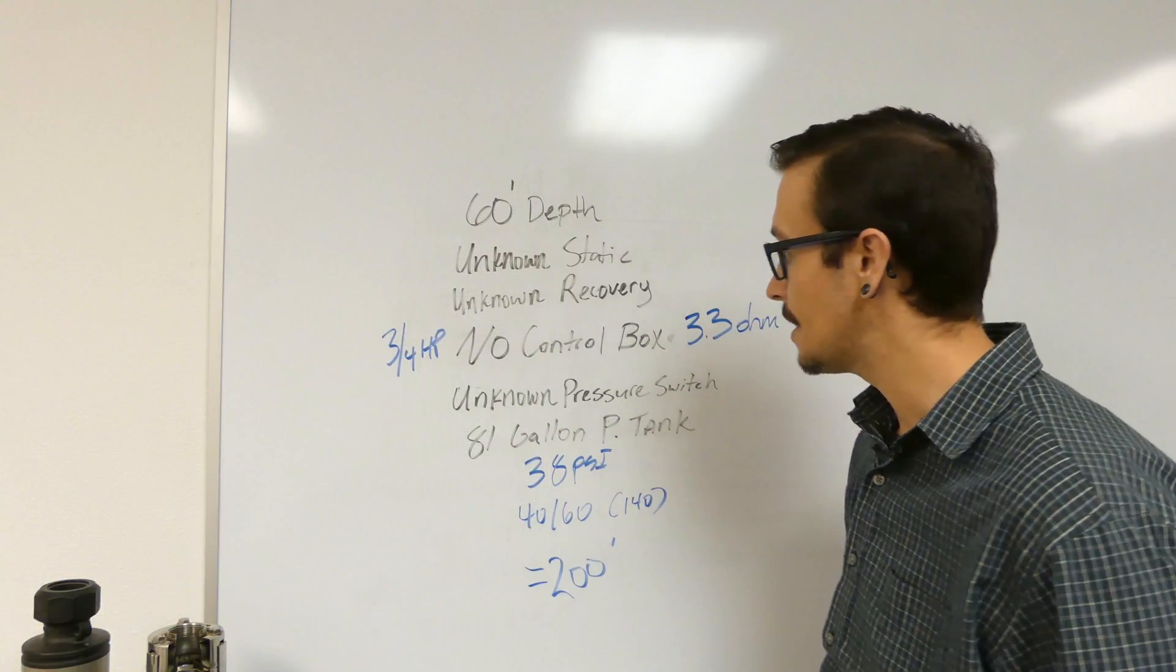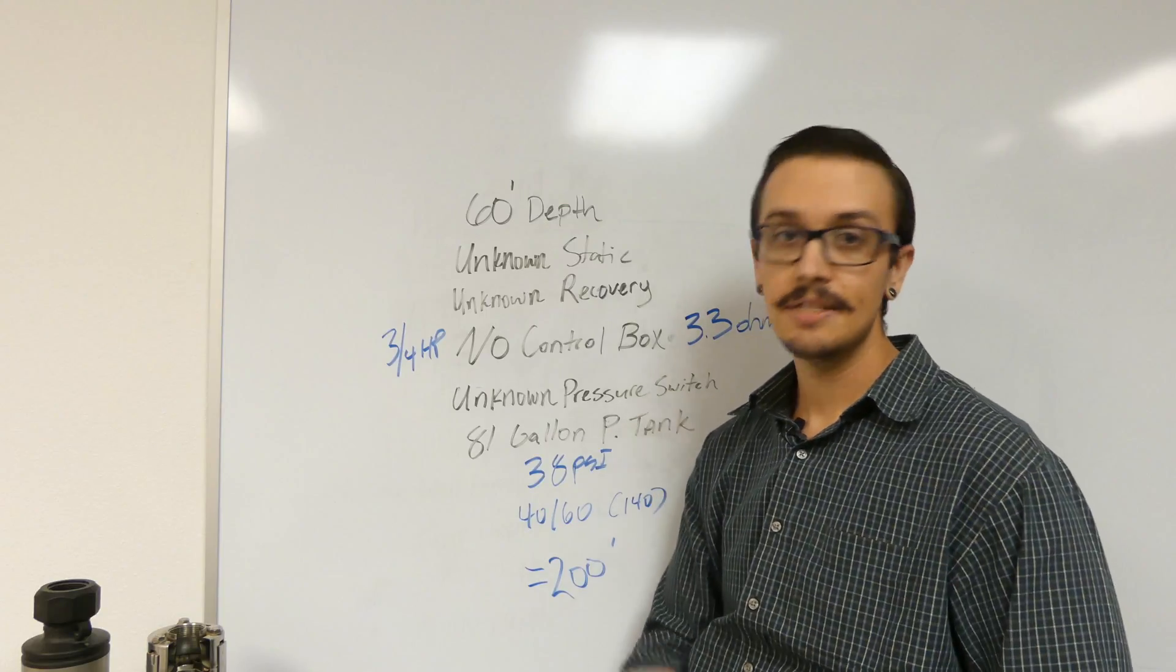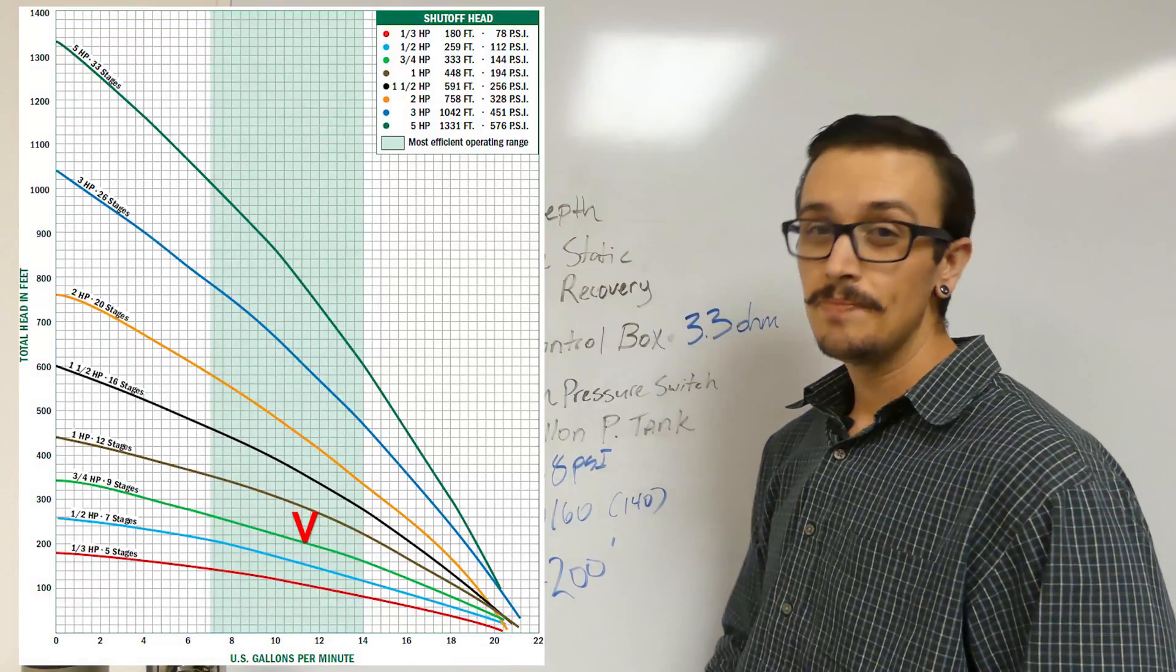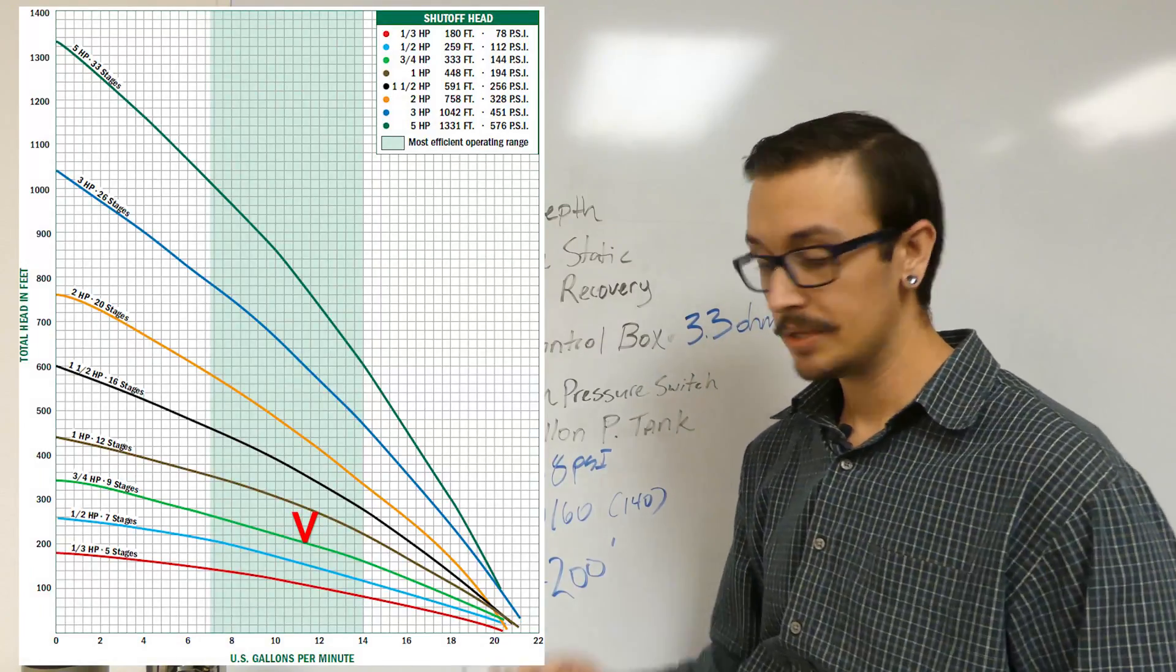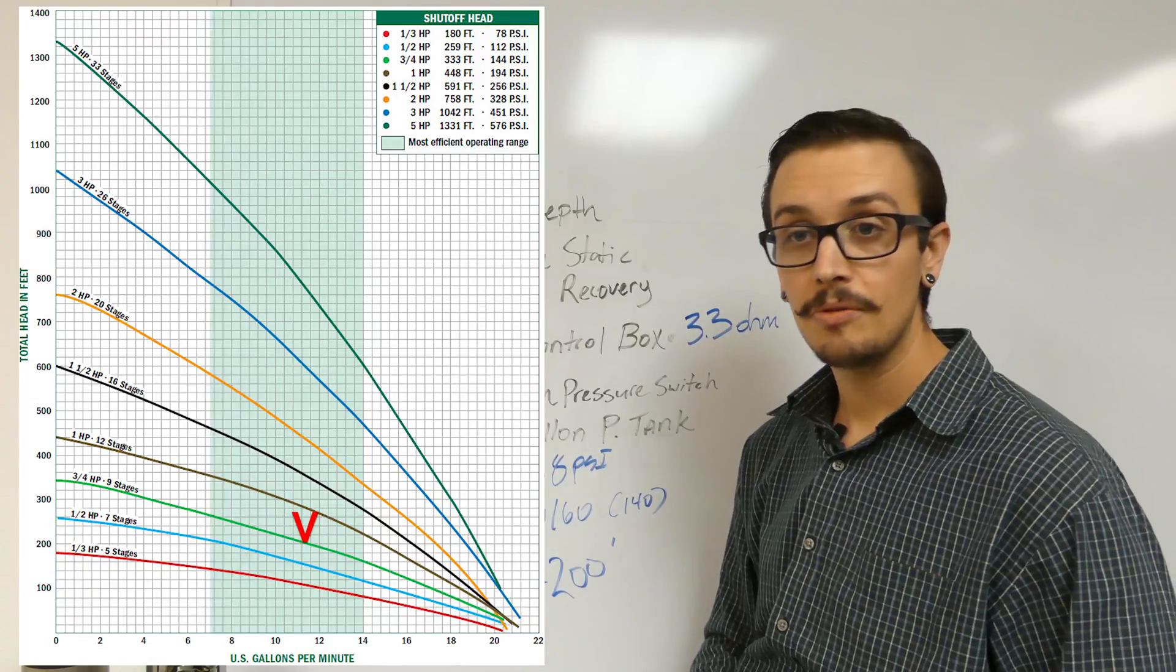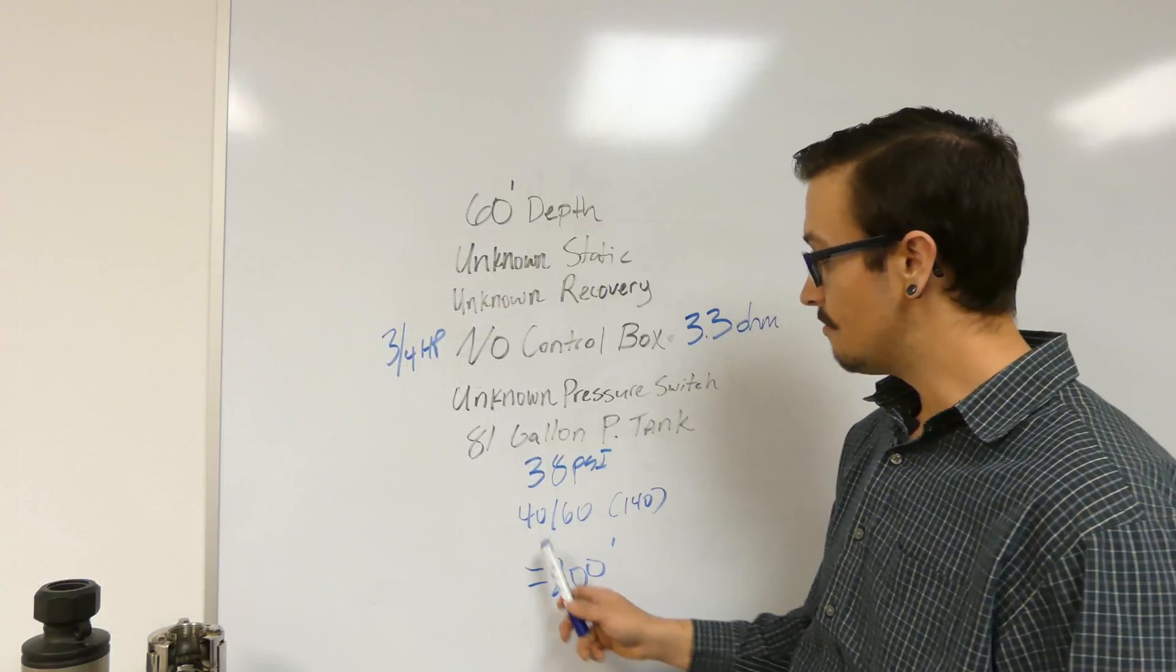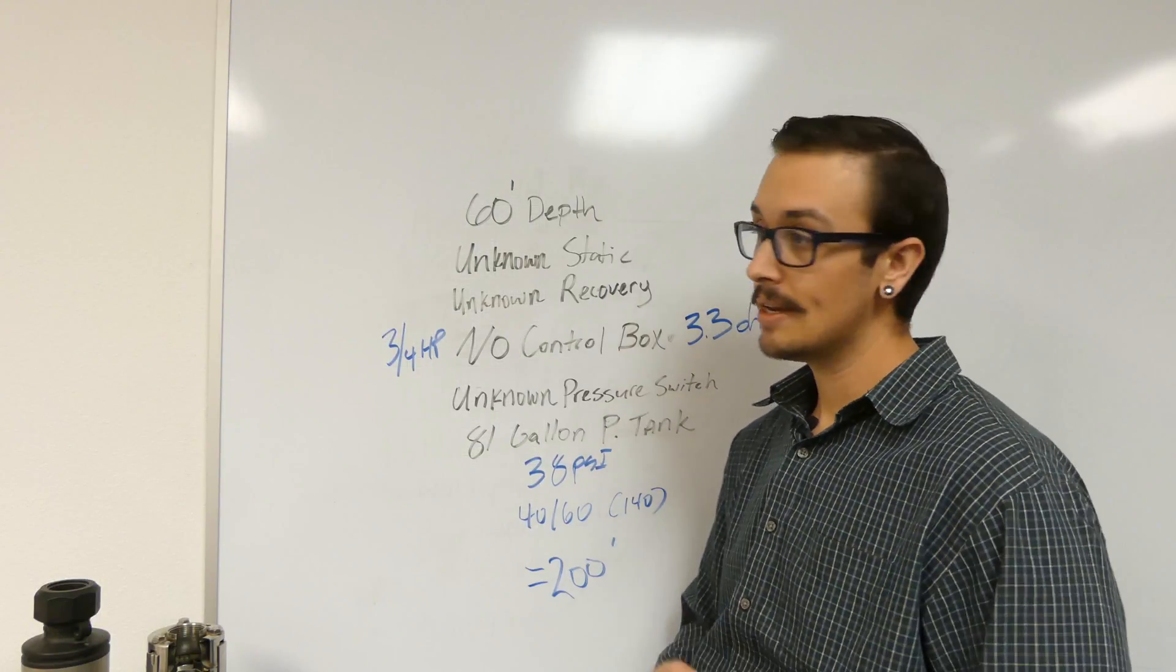So now let's just back way off and go to a 10 gallon a minute pump and see if that one looks like it might be a good fit. And what do you know, it happens to be a 10 gallon a minute pump. It's at a great spot in the pump curve. It will pump the entire range of the curve from 40 to 60 PSI wonderfully, and I have a lot of confidence that this would be the right pump.